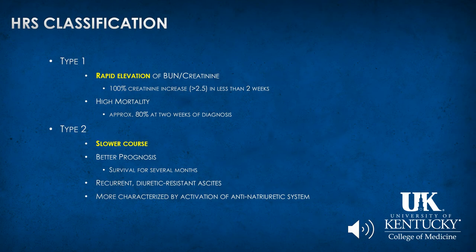HRS presents in two forms differing primarily by time frame. HRS type 1 has very rapid development and high mortality. HRS type 2 is a slower course — months — with better prognosis and more time to treat. Treatment options as a temporizing bridge include restoring intravascular volume with albumin, vasopressors targeting splanchnic circulation — midodrine or vasopressin in the US, terlipressin in Europe — and TIPS placement to buy time until liver transplantation, which is the only definitive cure.